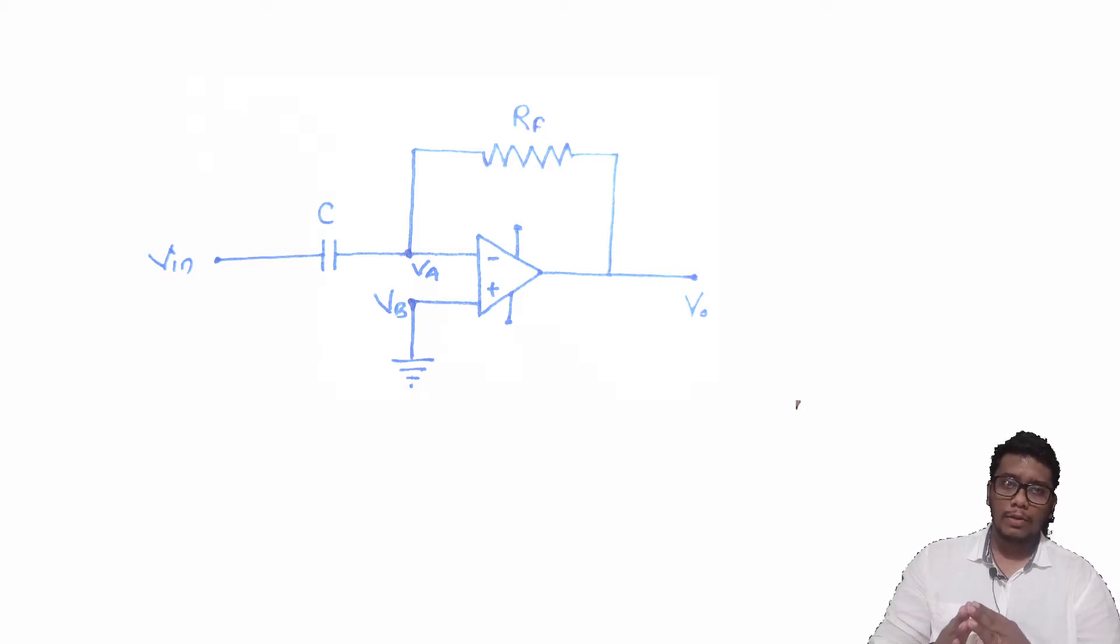And at the input side, at the inverting terminal, we used capacitor in the Differentiator and resistor in the Integrator. This is the difference between Integrator and the Differentiator.